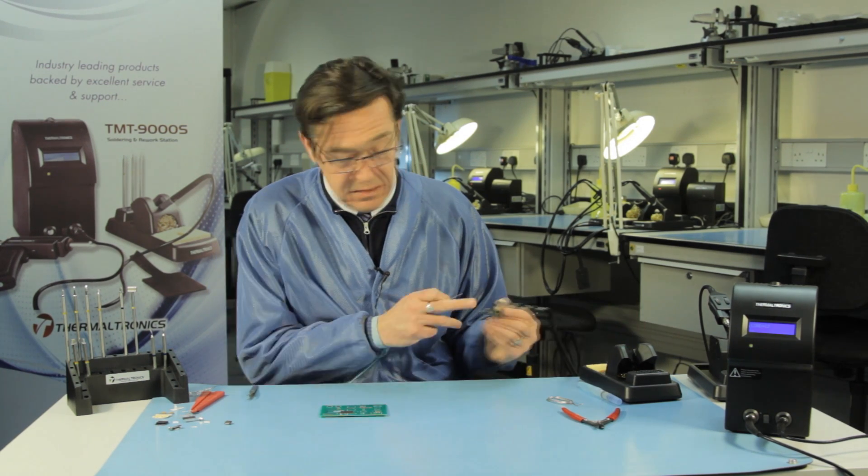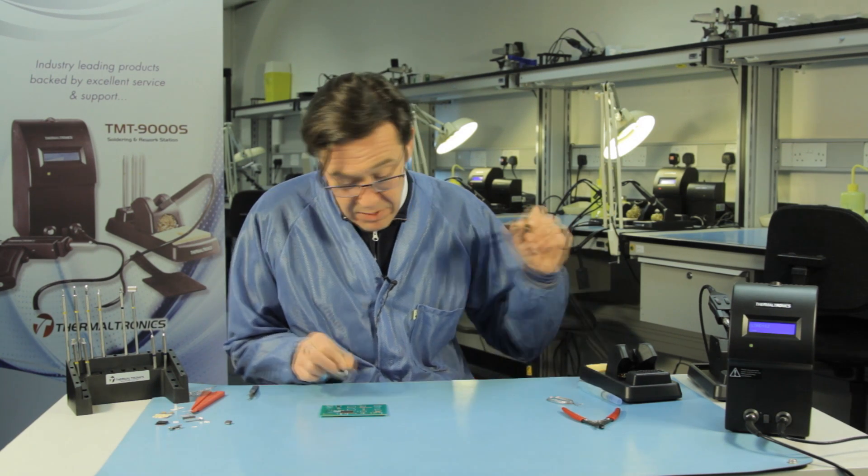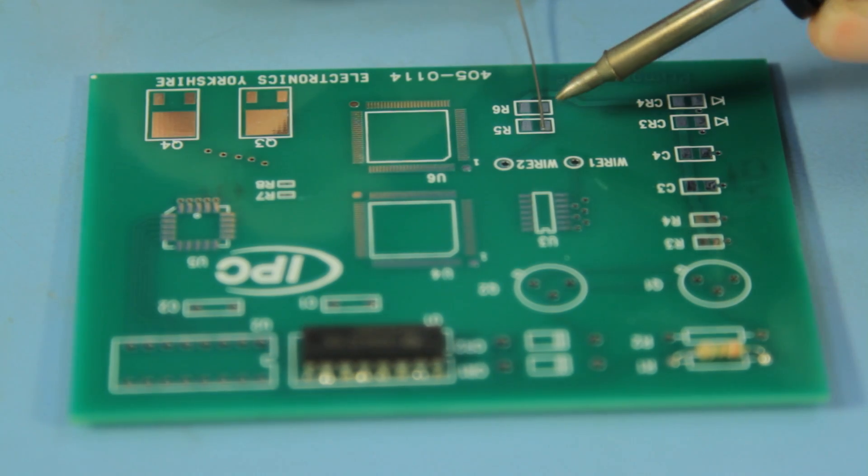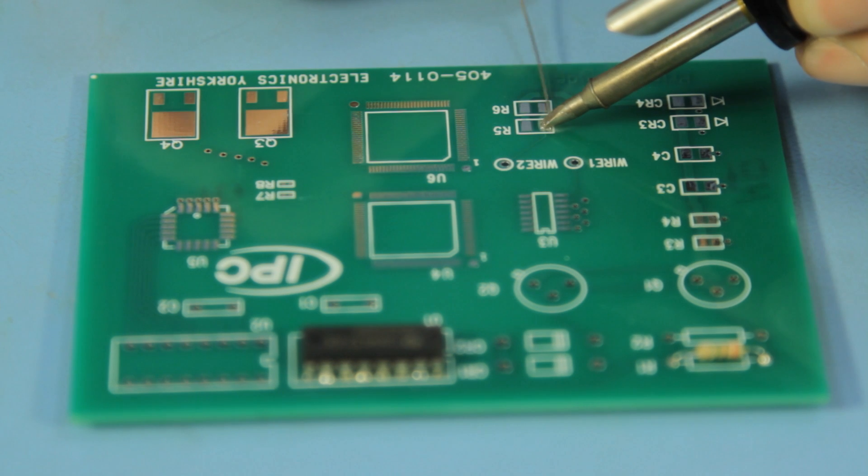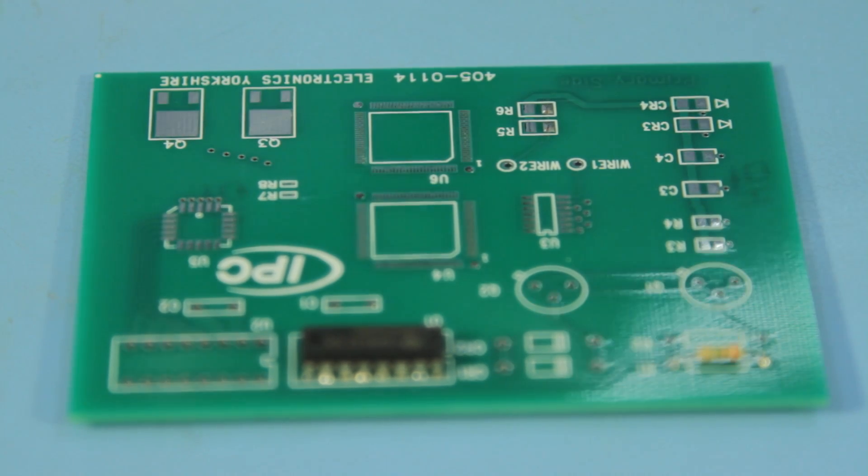Correct tip selection and solder wire selection is very important. What we have to do is place a certain amount of solder on one side called crowning. We'll crown the lands on one side of the pads.